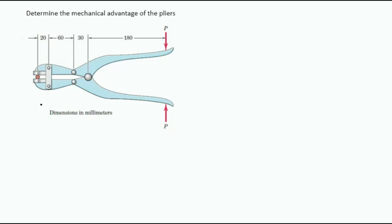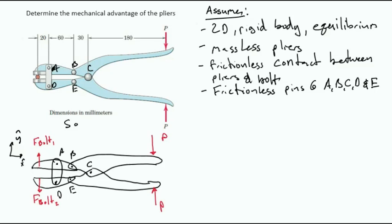First, let me label the diagram with all the relevant points: A, B, C, D, and E. Removing the bolt from the system and taking the entire pliers as the system, remove the bolt with a normal contact at the point of contact between the bolt and the pliers. I have made the assumption that this is a frictionless contact.